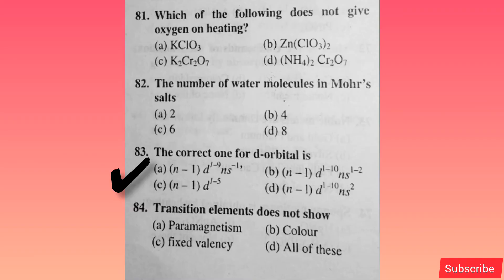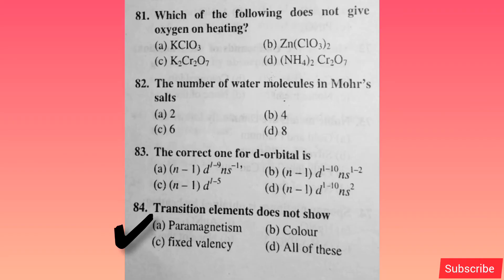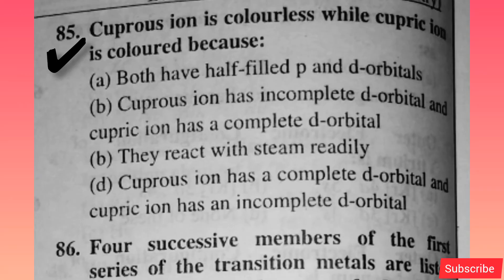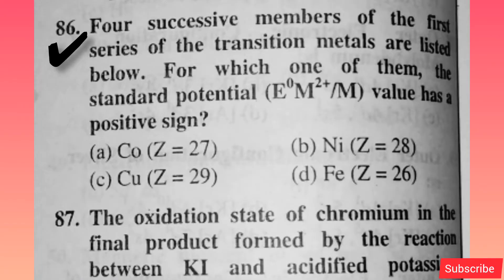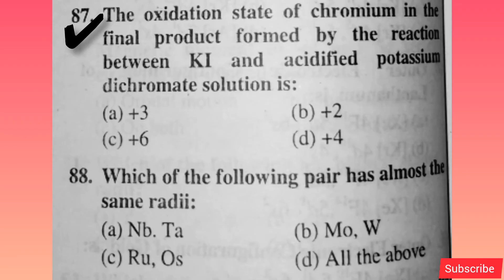The correct one for d orbitals is — option B is correct. Transition elements do not show — option C is correct. Cuprous ion is colorless while cupric ion is colored — option C is correct. Four successive members of the first series of the transition metals are listed. Among them, the standard potential value has a positive sign — option C is correct. The oxidation state of chromium in the final product formed by the reaction between KI and acidified potassium dichromate solution is — option A is correct.